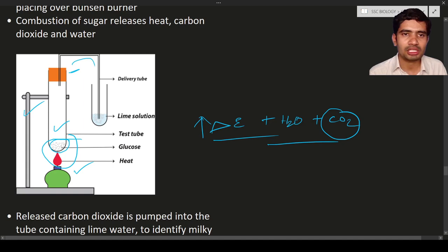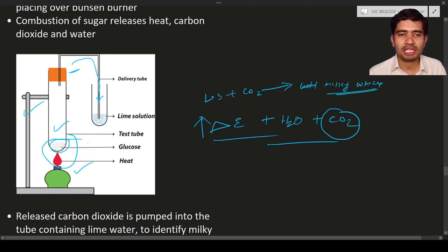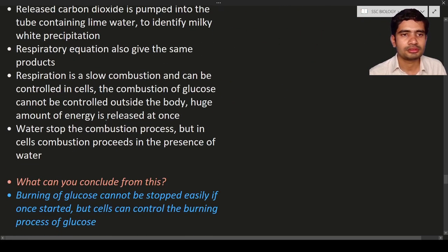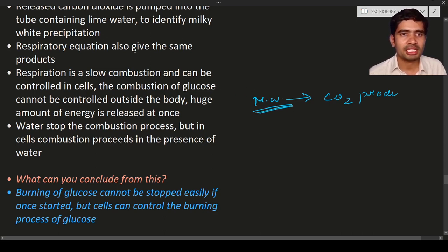The carbon dioxide produced travels through the delivery tube and mixes with the lime solution in another test tube. As a result, the lime solution plus carbon dioxide produces a milky white precipitation. Based upon the milky white appearance of the lime solution, we can confirm that carbon dioxide is produced. The respiration equation also gives the same products. Respiration is slow combustion.